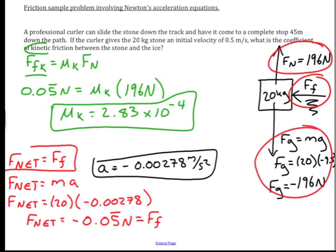That's a very small amount of friction, but certainly there is a very small amount of friction that the stone experiences as it travels down the curling rink. If you think you've got it all figured out, then let your computer know.